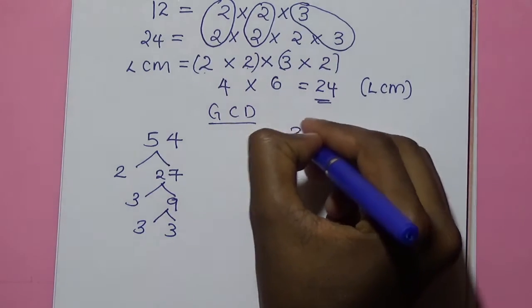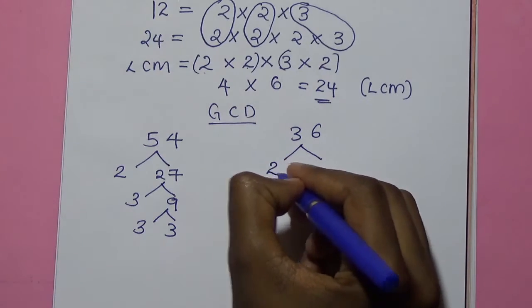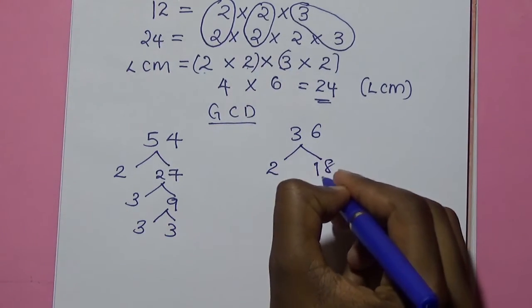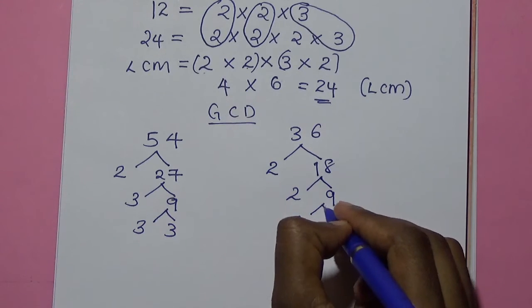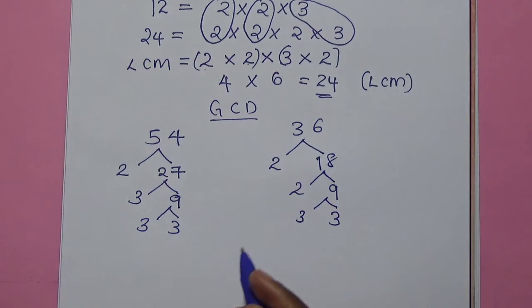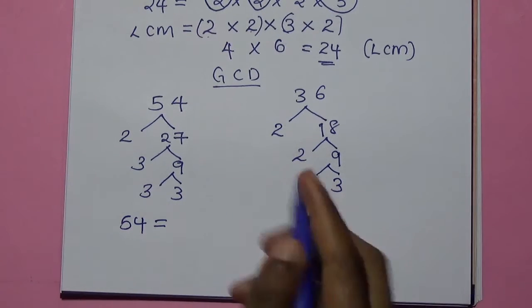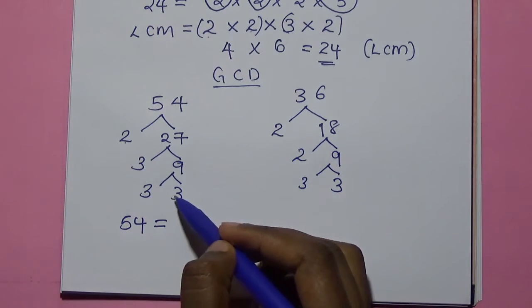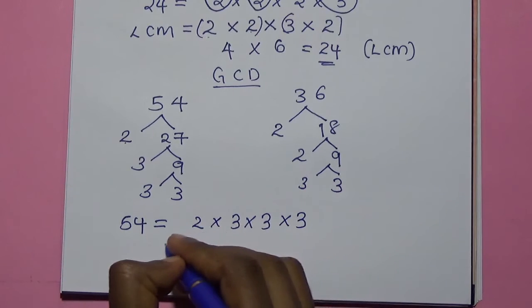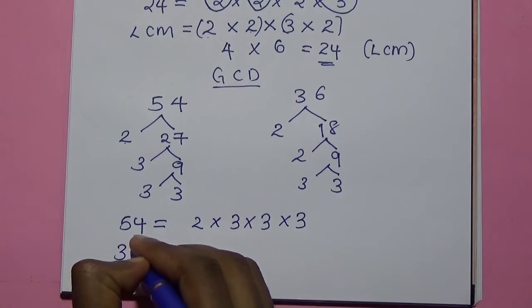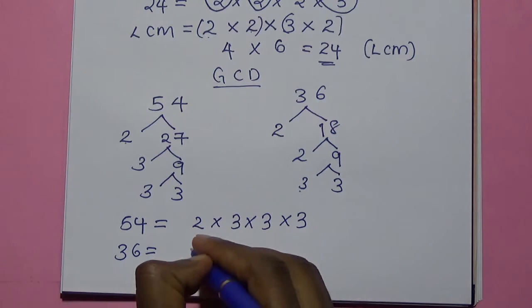We go to 36 and use the same method to find the prime factors. This will be 2 because of 18, then 2 because of 9, then 3 and we are left with 3. Therefore, the prime factors for 54 are 2 times 3 times 3 times 3, and the prime factors for 36 are 2 times 2 times 3 times 3.